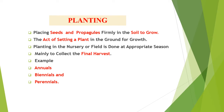First, let's understand what we mean by planting. Planting is placing seeds or propagules firmly in the soil to grow. It can also be described as the act of setting a plant in the ground for growth. It's done at an appropriate season, and the aim is basically to collect the final harvest. We have accordingly annuals, biennials, and perennials depending upon their stay in the field and their life cycle.